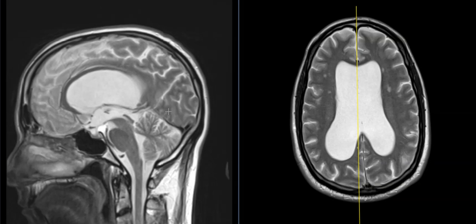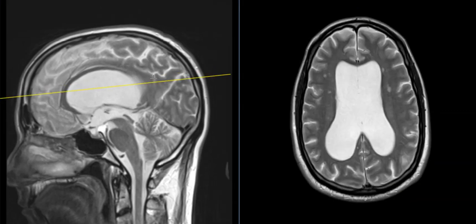Sometimes you have obstructive hydrocephalus, where you have a tumor someplace and it blocks the normal flow out of the lateral ventricle into the third ventricle, through this little narrow channel here, and then into the fourth ventricle and out. So we look through this whole area to see if they're all enlarged or if there is a tumor blocking one, and now we're going to do that.